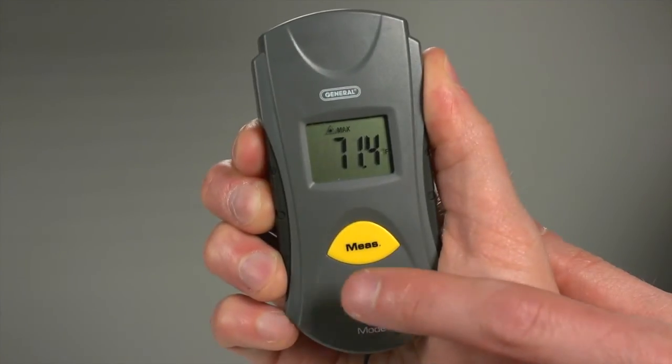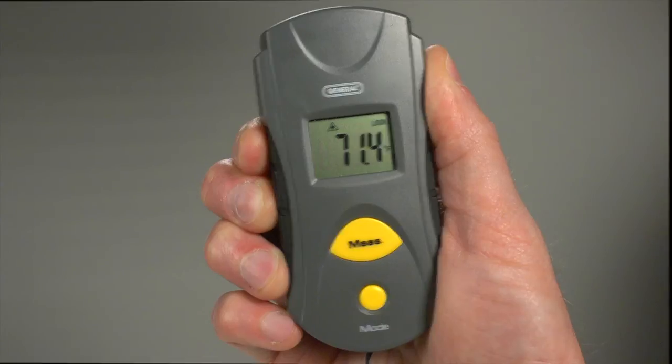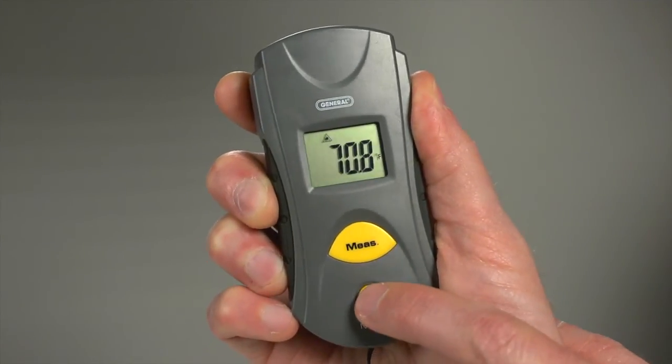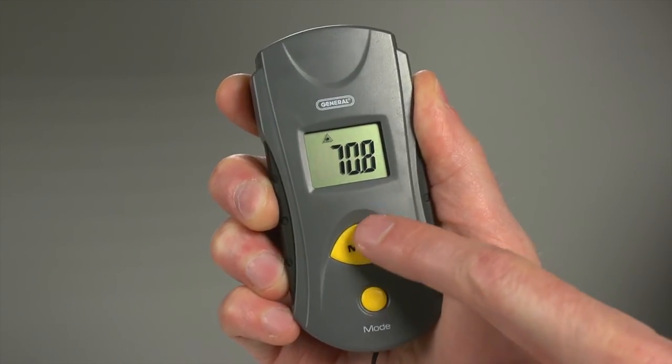Press three times for lock. Now your measurement feature stays on without holding measure, displaying temperatures with the laser pointer off. Press four times for CF mode. Now press measure to switch between Fahrenheit and Celsius.